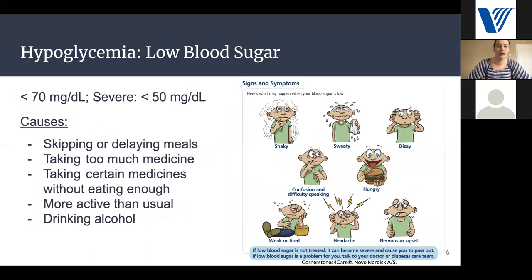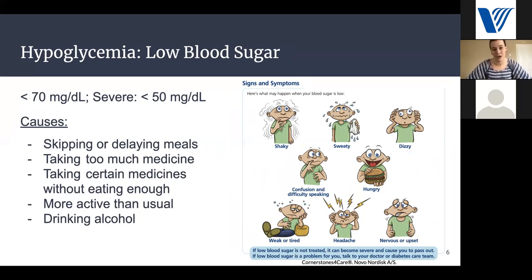On the opposite side, we have hypoglycemia or low blood sugar. This is defined as a blood sugar of less than 70 for a regular low, or less than 50 for a severe low. Causes include skipping or delaying meals, taking too much medication, taking certain medicines without eating enough, being more active than usual, or drinking alcohol. Signs and symptoms of low blood sugar include being shaky, sweaty, or dizzy, getting confused or having difficulty speaking, feeling hungry, weak, or tired, headache, or feeling nervous or upset. Different patients experience different symptoms, and some patients might not experience symptoms at all.